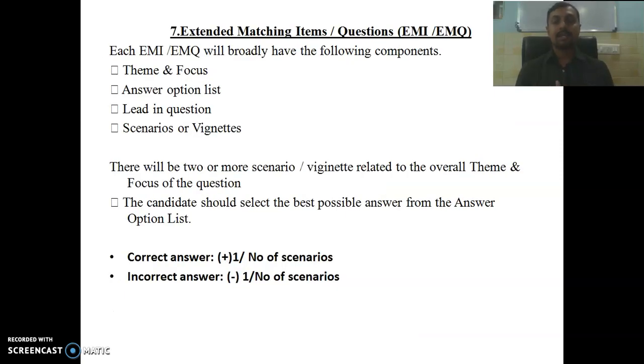Last category is the extended matching types. That is EMI or EMQ. This is the most confusing category for everybody out there. Here the question will be very big. The question consists of four components. First it will consist of some theme, then answer option list, leading questions, and scenario or vignettes. Vignettes is the small description. Here if you go correct you will get one and wrong the minus one will be there.